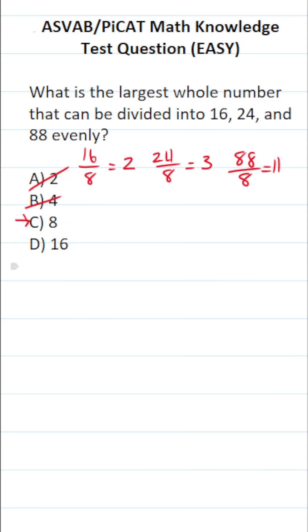That said, we still have to check whether 16 can go into 16, 24, and 88 evenly. So let's get started doing that. What is 16 divided by 16? That's going to be 1. Okay, so 16 goes into 16 evenly.